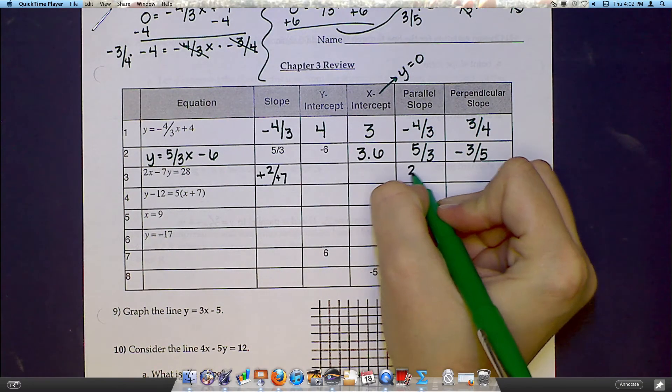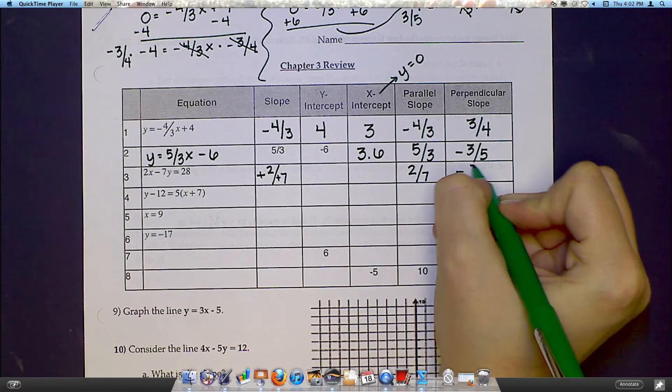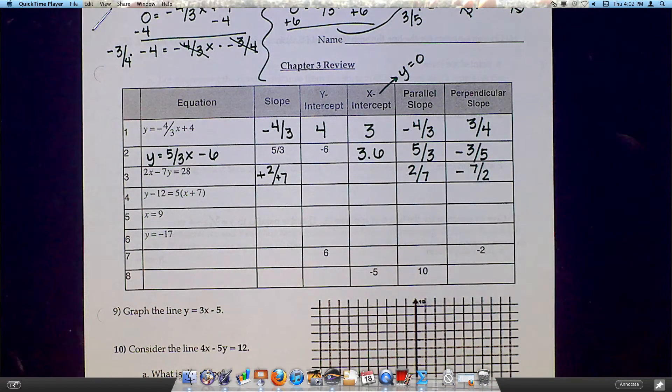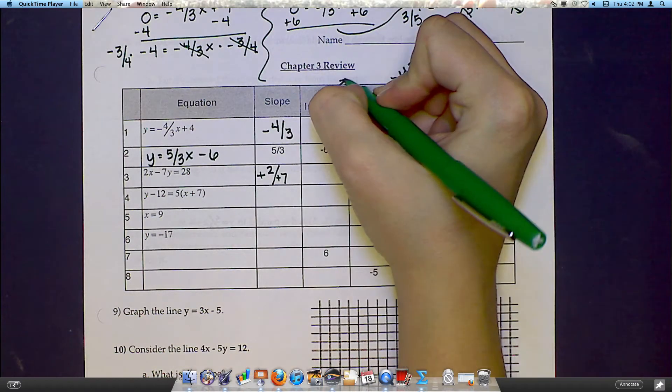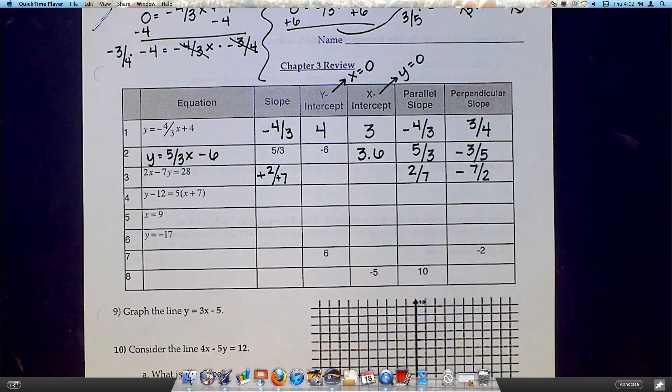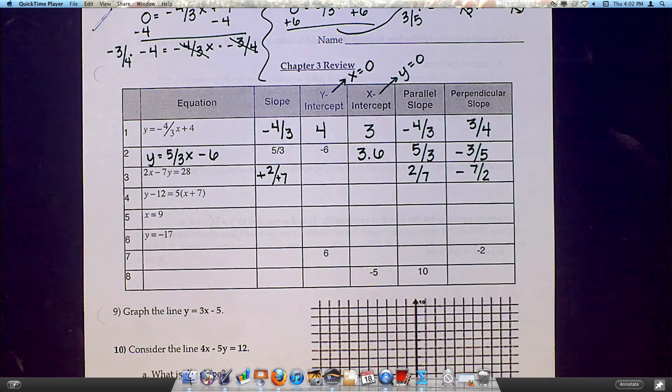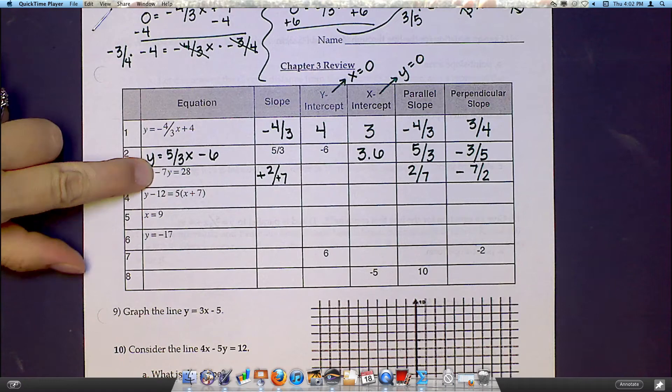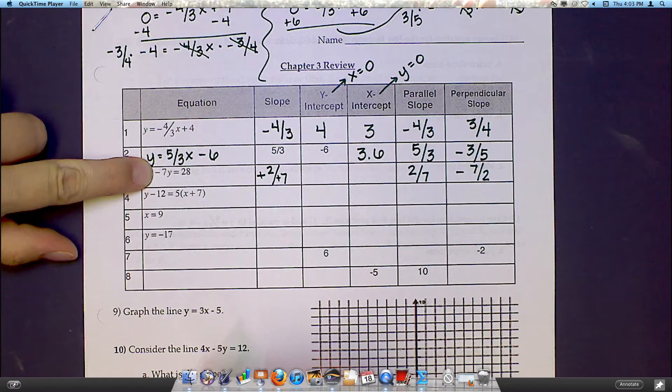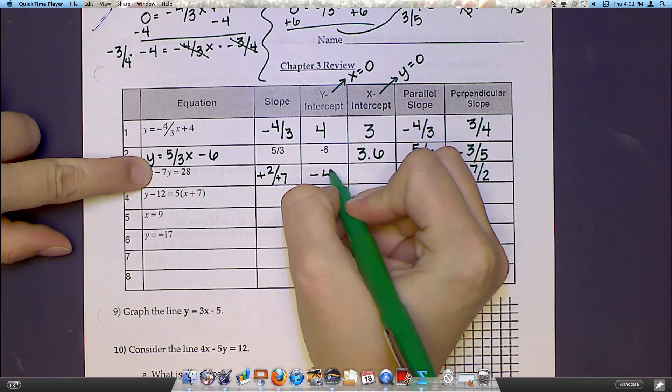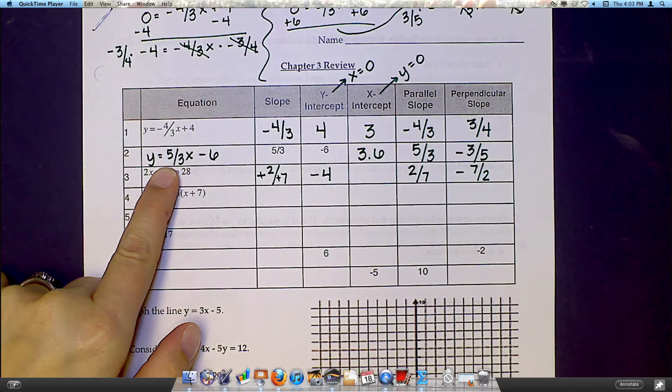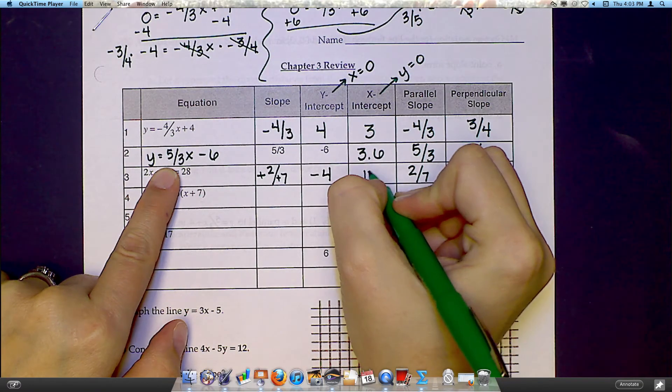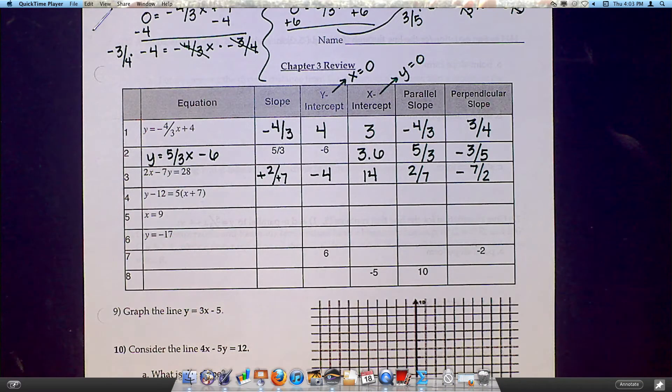That means my parallel slope is 2 over 7, and my perpendicular slope would be negative 7 over 2. The y-intercept means I want to make x equal to 0. So when it's not written in slope-intercept form, you're going to have to plug a 0 in for x. That means that really my x term is just going to cancel out, and I'll be left with negative 7y equals 28. So my y-intercept would be negative 4. For my x-intercept, I'm going to cover up the y, and I end up with 2x equals 28, so that means for x-intercept I would have 14.